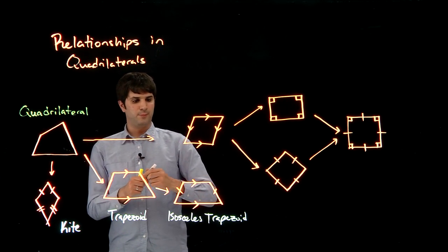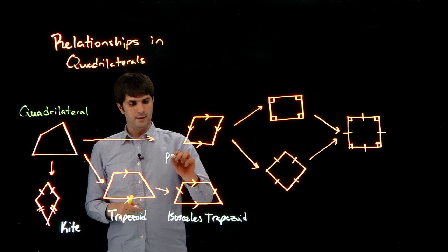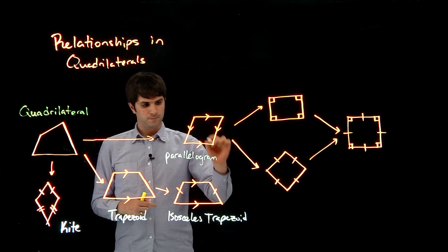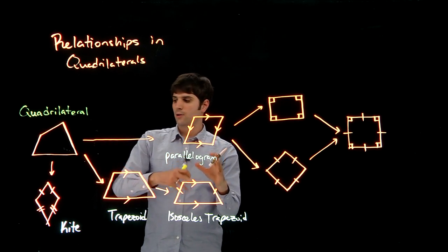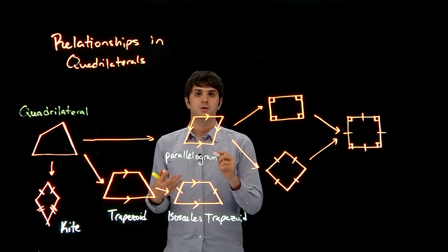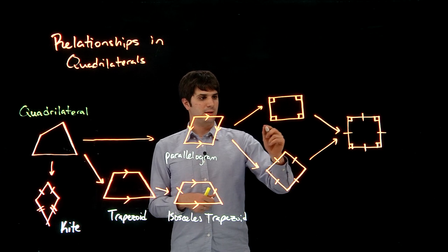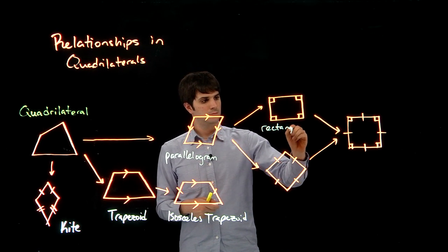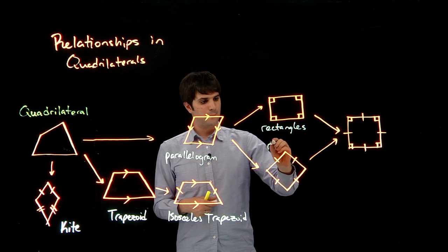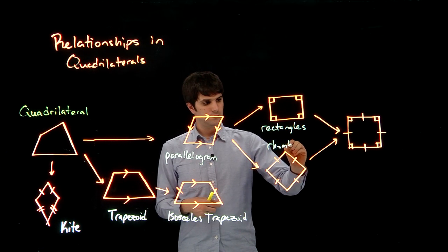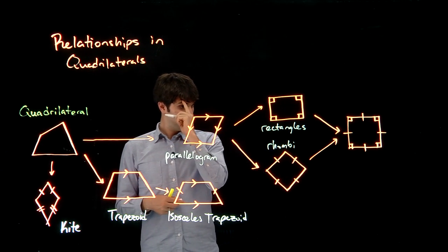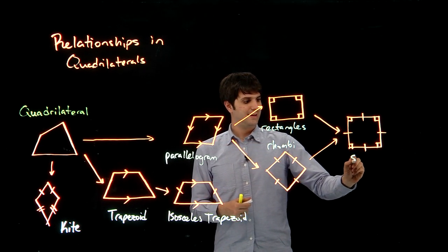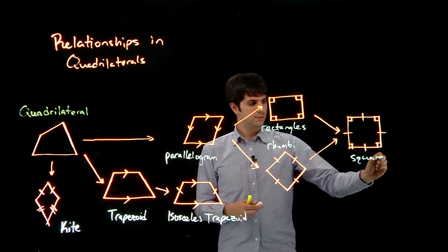Finally, the third type, we have parallelograms. So all parallelograms are quadrilaterals, and then we have two types of parallelograms. We have rectangles, we have rhombi. So rectangles and rhombi, and if you have a rectangle and a rhombi, then that is a square.